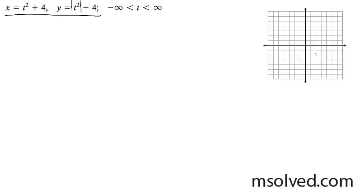So at t equals zero, it's always going to start out right here at four, negative four, and then it's going to be linear. If you plug in one or negative one, you're going to get five and negative three — and then it's just linear like this.